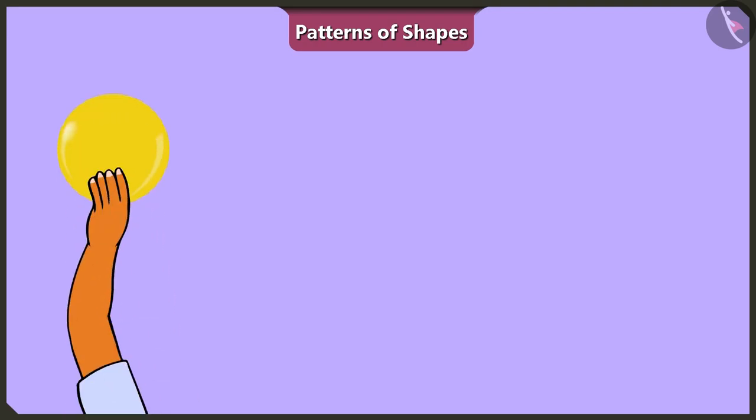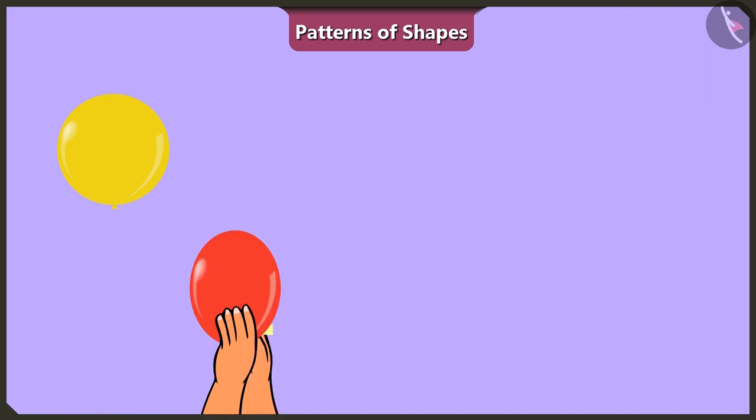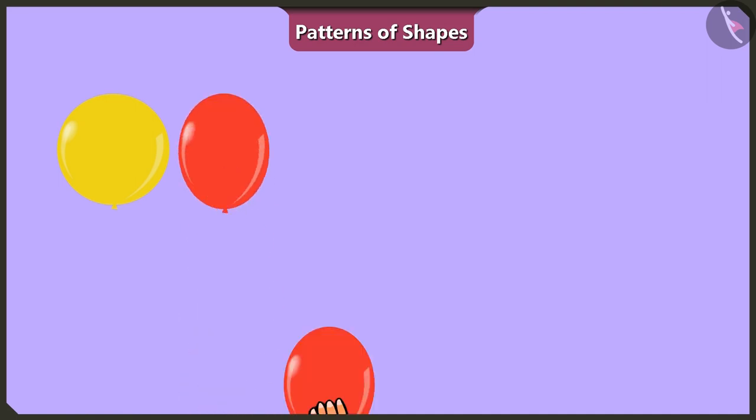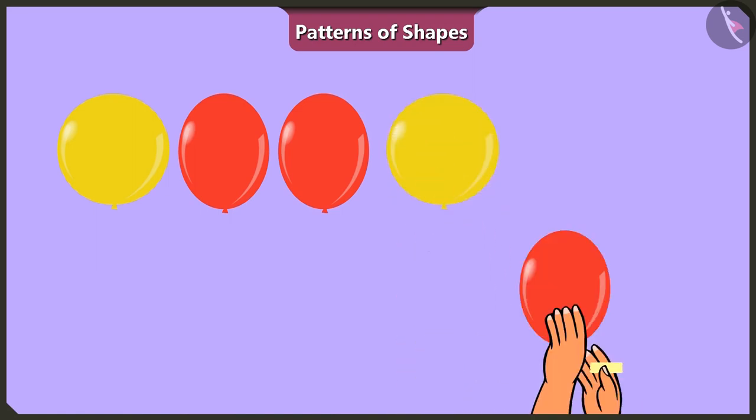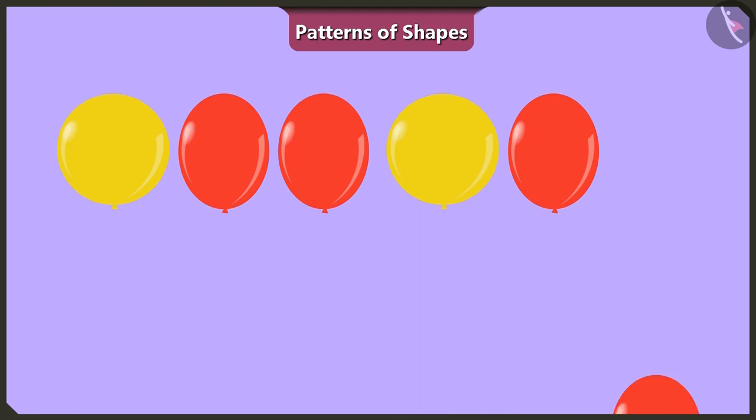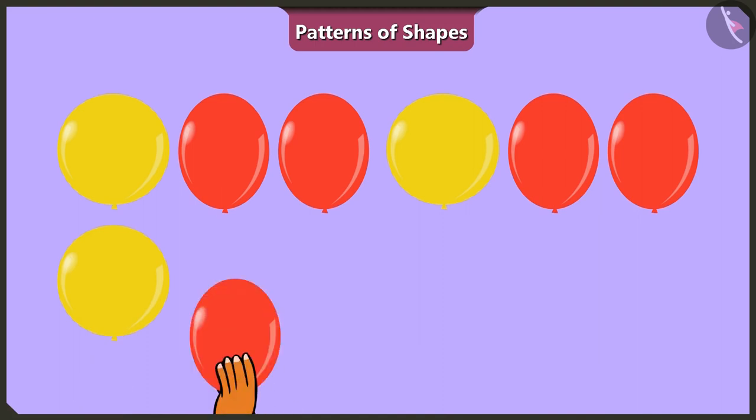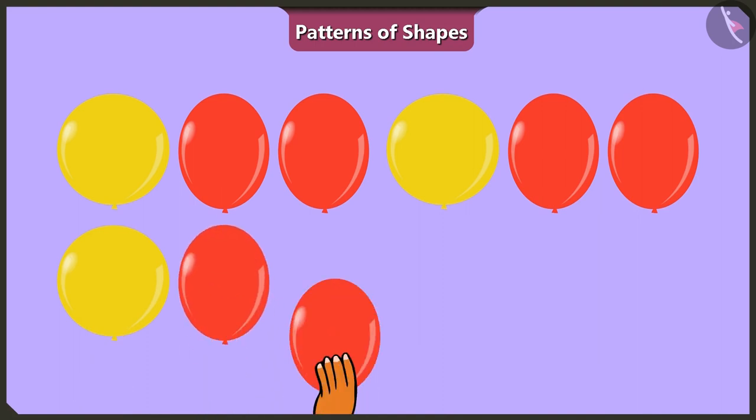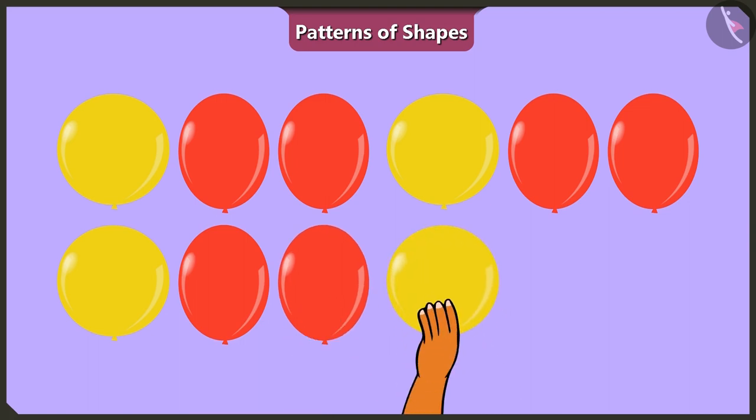One yellow spherical balloon. Then, two red oval shaped balloons. Then, one yellow spherical balloon and two red oval shaped balloons. Then, one yellow spherical balloon and two red oval shaped balloons. Let's continue with this sequence.